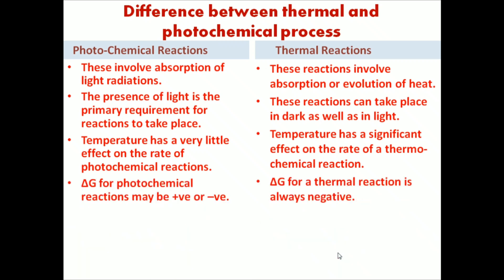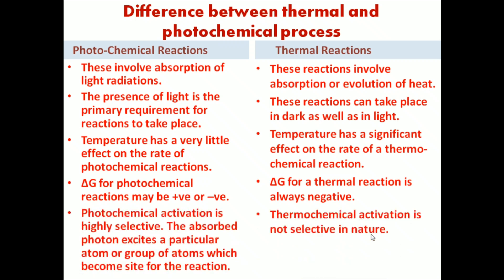The next point of difference: delta G, commonly called Gibbs free energy, for photochemical reactions may be increased or decreased. But in the case of thermal reactions, delta G is always negative, meaning it always decreases. Finally, photochemical activation is highly selective in nature — the absorbed photon excites a particular atom or group of atoms which becomes the site of reaction. Thermochemical reactions are not so selective in nature.